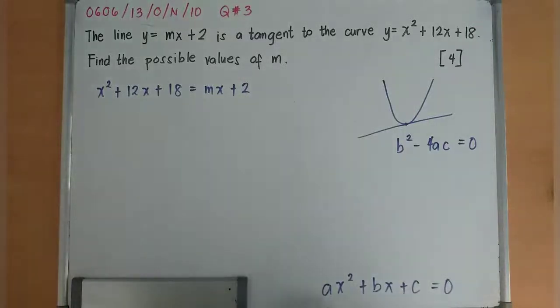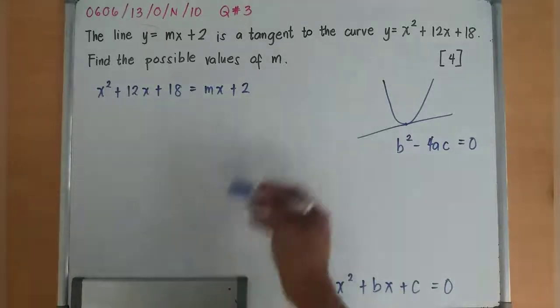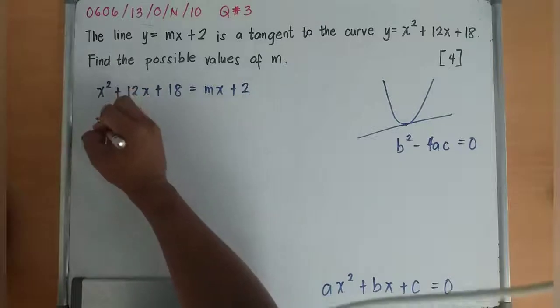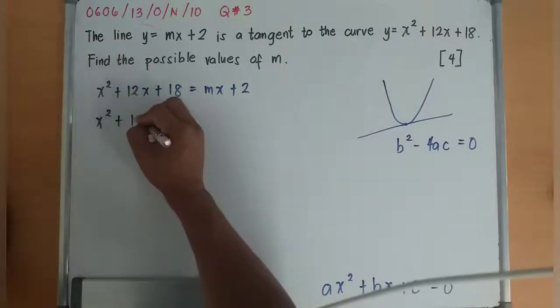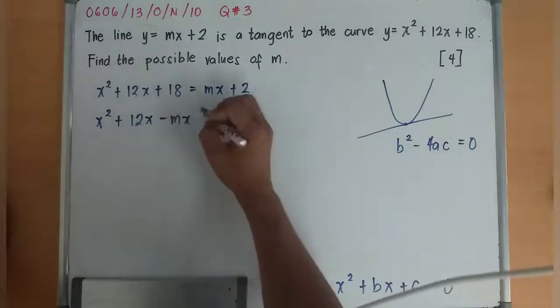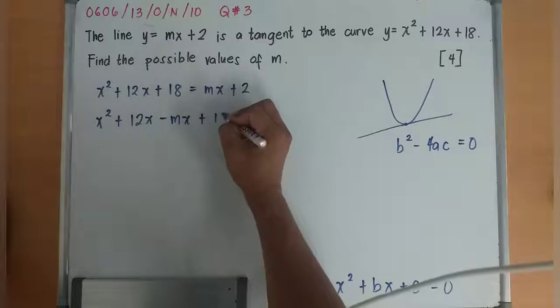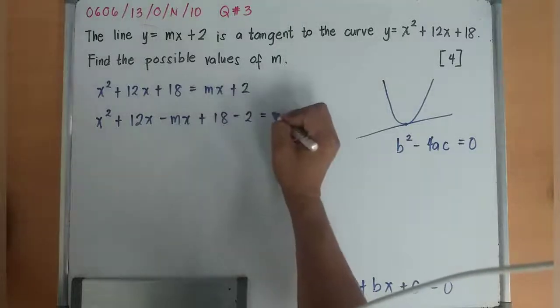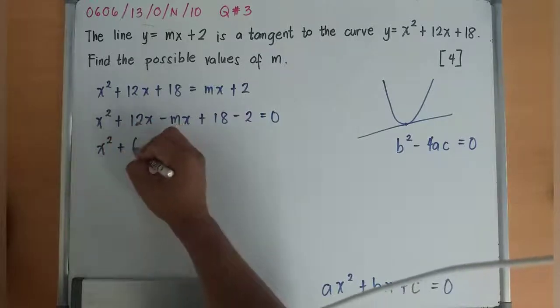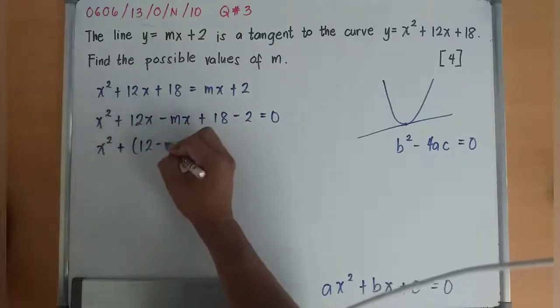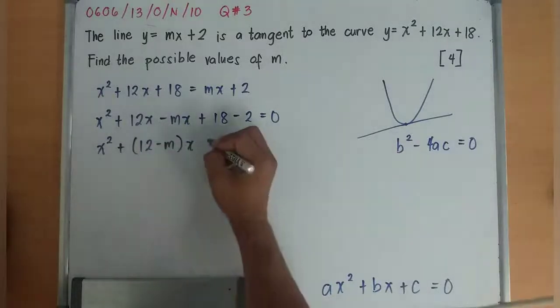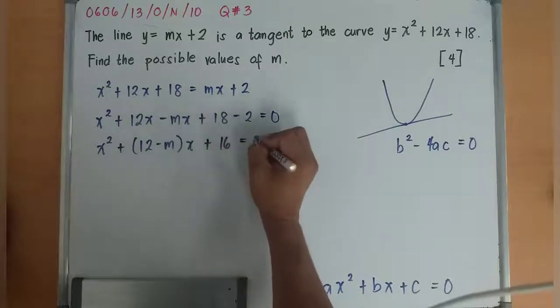So you need to look for a, b, and c. Let's equate this entire thing with 0. So it will become x² + 12x, I'll bring mx to the left side minus mx, plus 18 minus 2 = 0. Thus, it will become x² + (12 - m)x + 16 = 0.